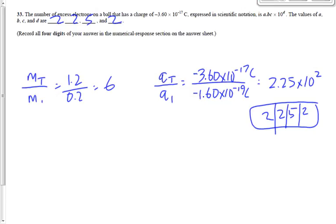There are going to be a dozen or two times this year where you have to find a number of something — number of electrons, number of photons, whatever it is. You always use the same basic method: total something divided by the amount for one. Total mass divided by mass of one, total charge divided by charge of one, total energy divided by energy for one. Remember that — you're going to see it again in a week or two, and again in a couple of months.